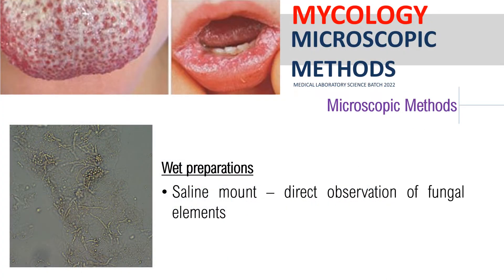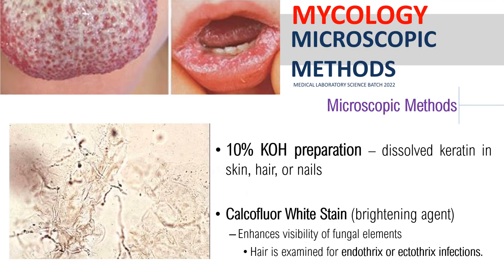Wet preparations — saline or 10% KOH — are the most common microscopic methods used both directly and after culture. Saline is used for the direct observation of fungal elements. However, saline is problematic because it does not dissolve keratin in clinical samples such as skin and nails. The laboratory handbook of medical mycology recommends the use of 10% KOH for direct detection of fungal elements in clinical samples.